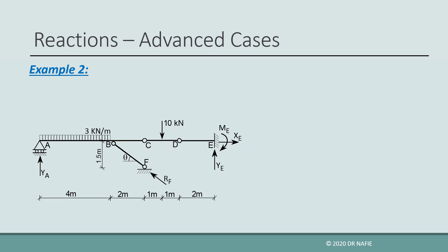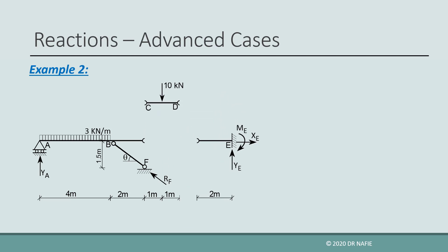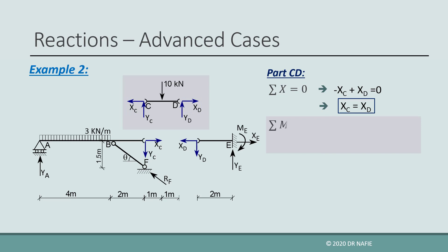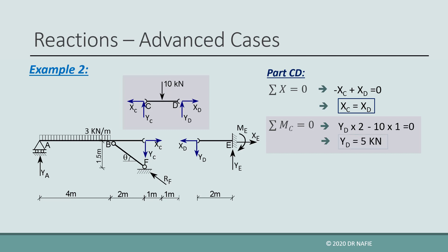We have five unknown reactions, so we need two extra equations that will be provided by the hinges at C and D. So we will cut the beam at points C and D into three parts and apply the equilibrium equations at the three parts. We will start by applying the equations at part CD. Part CD has four unknowns: XC, YC, XD, and YD. By applying sigma X equals zero, we figure out that XC is equal to XD, but we don't know their values. By taking the sum of moments about point C, XC, YC, and XD all pass through C and will not be included. The equation will have two terms: positive YD multiplied by 2 meter arm, and negative 10 kN force multiplied by 1 meter arm. The equation gives a value of 5 kN for YD.